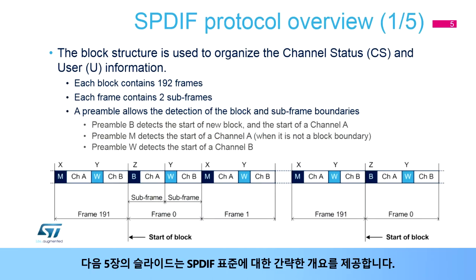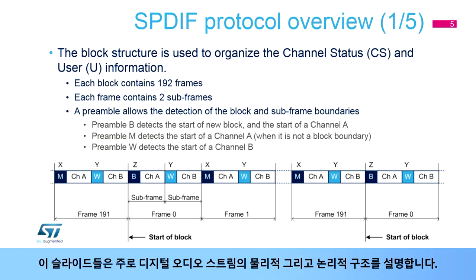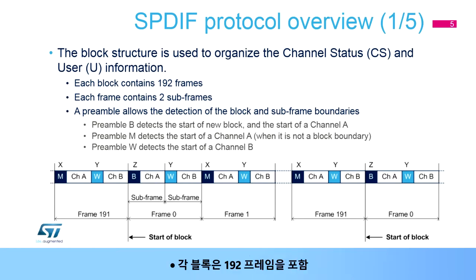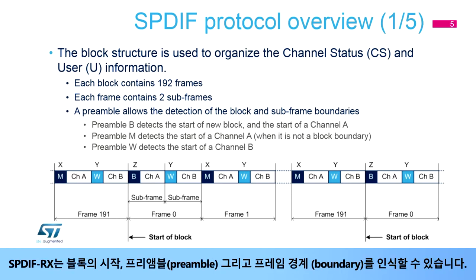The next five slides give a short overview of the SPDIF standard, mainly describing the physical and logical structure of the digital audio stream. In IEC-60958, the digital audio stream is organized in a block structure in order to decode the channel status, or CS, and user, or U, information. Each block contains 192 frames, and each frame contains two subframes. The SPDIF-RX is able to recognize the start of block, the preambles, and the frame boundaries.